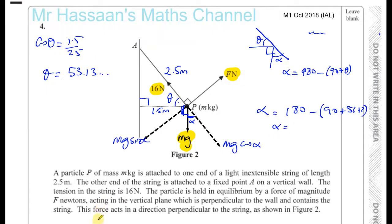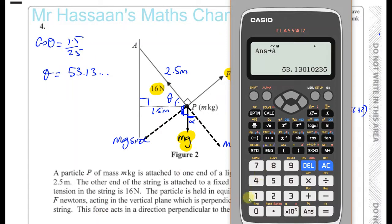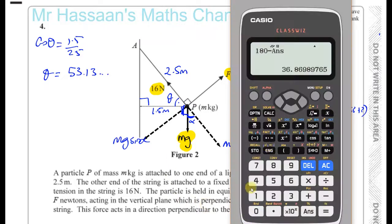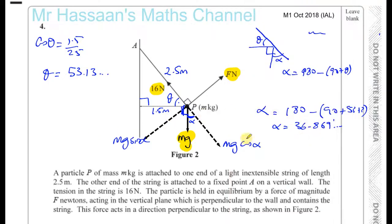So alpha is going to be 180, you're going to add 90 to this, and you do 180 minus your answer, 36.869. So 36.869 dot dot dot. So that's the angle over there, and we can save that as B.